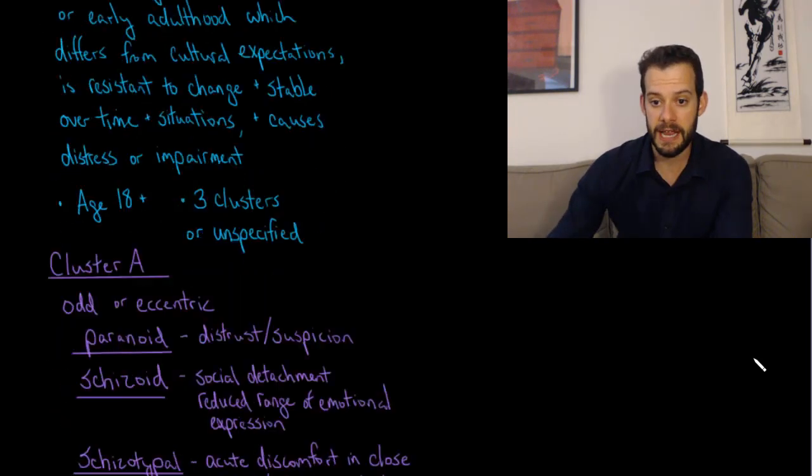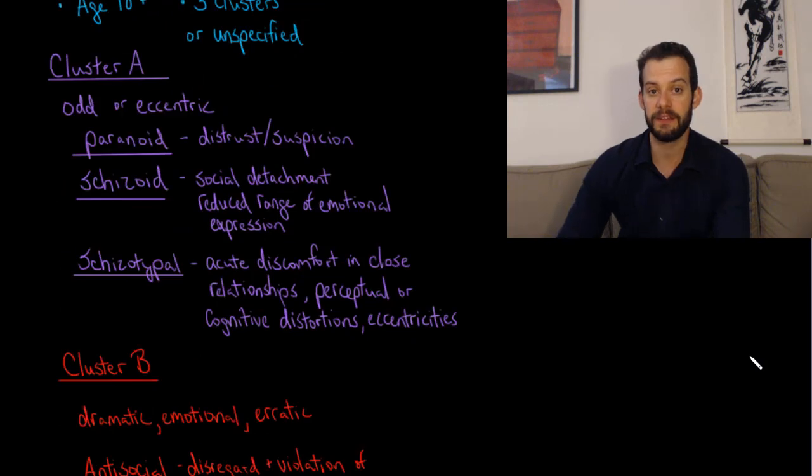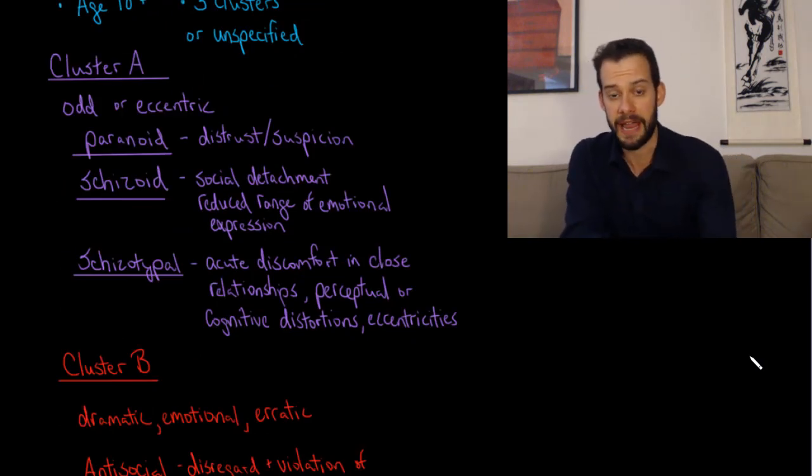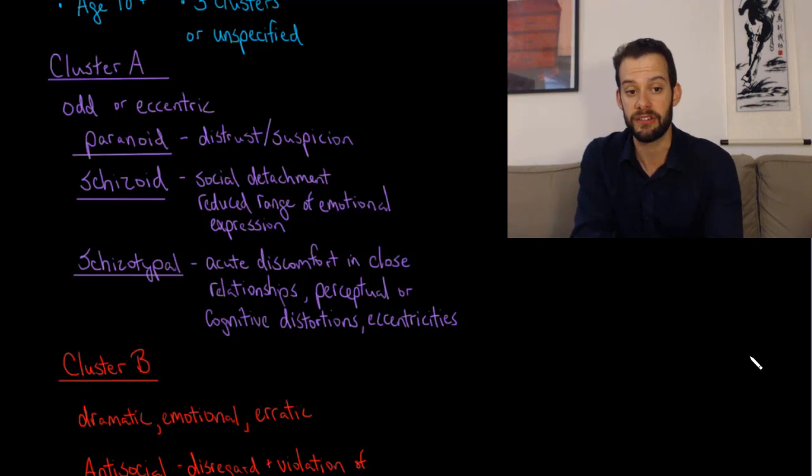Let's take a brief look at the 10 disorders that we find in this section. First we have cluster A and this refers to personalities that are seen as odd or eccentric. Paranoid personality disorder refers to a main symptom of distrust and suspicion of others. In schizoid personality disorder we have a main symptom of social detachment, so detachment from others and a reduced range of emotional expression. And lastly we have schizotypal personality disorder and this refers to acute discomfort in close relationships as well as perceptual or cognitive distortions and eccentricities of behavior.